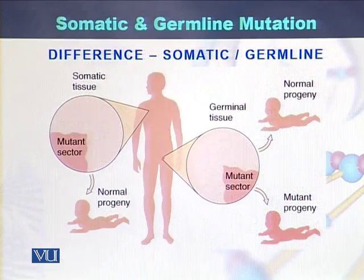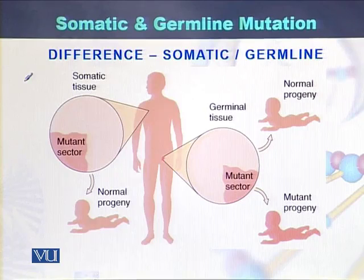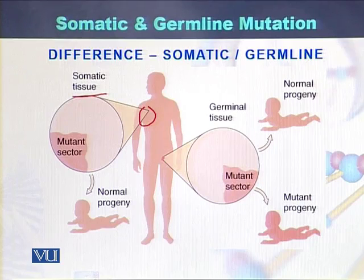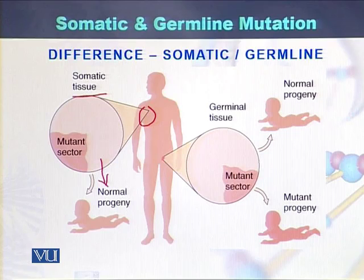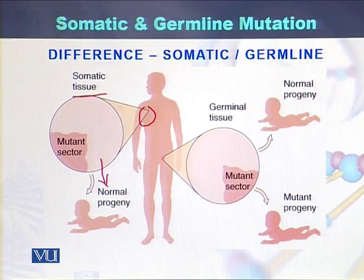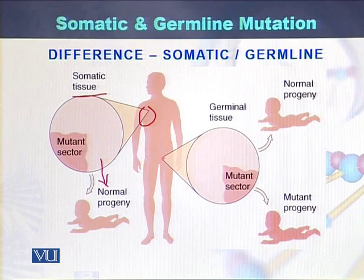In this diagram, we can see the difference between somatic mutations and germline mutations. The body is made up of somatic tissues. If there is any mutation within the somatic tissue, that mutation will not transfer to the progeny. So a somatic mutation occurs in the somatic cells, which are also called body cells, and can transfer to surrounding cells by a process called mitosis.